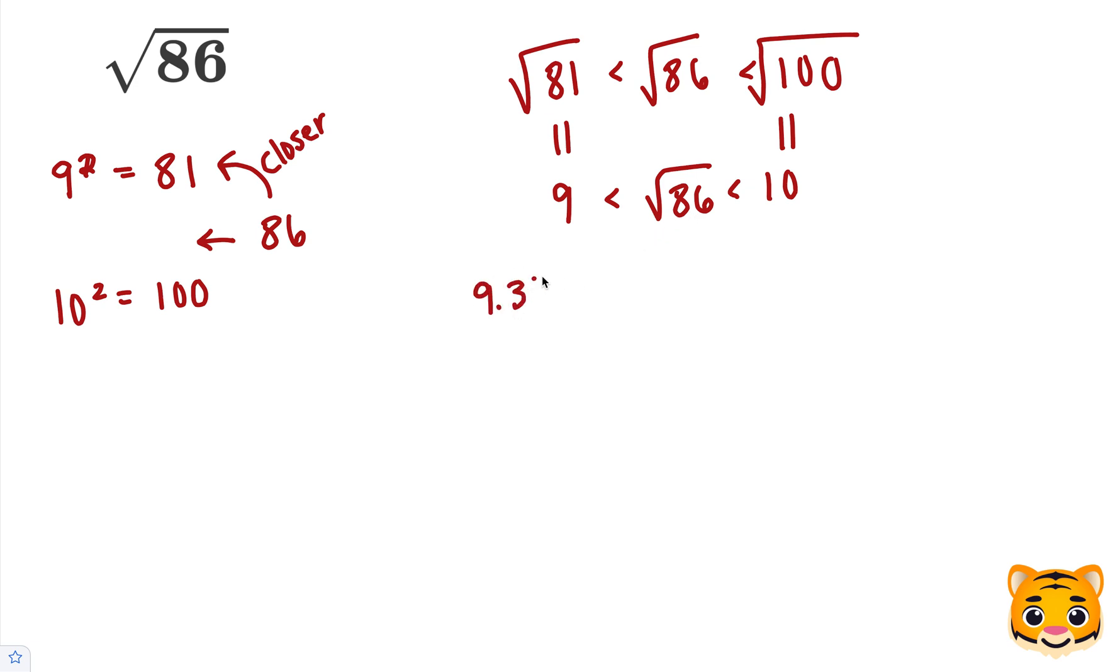Let's try out something like 9.3 squared, which is 9.3 times 9.3. 3 times 3 is 9, 9 times 3 is 27, add our 0,